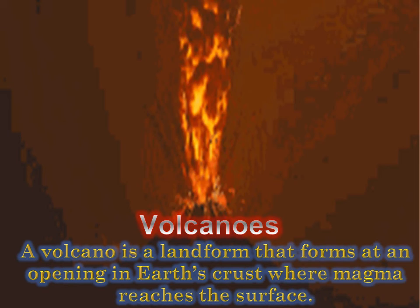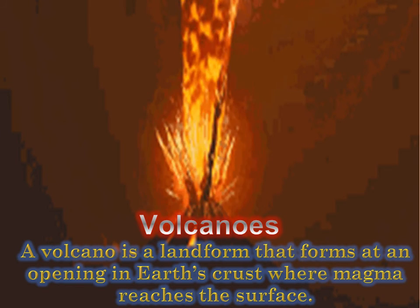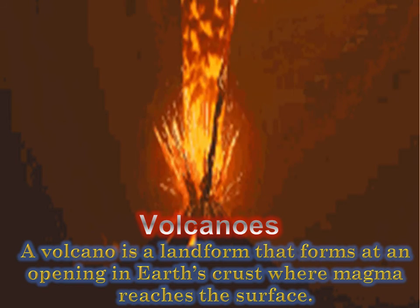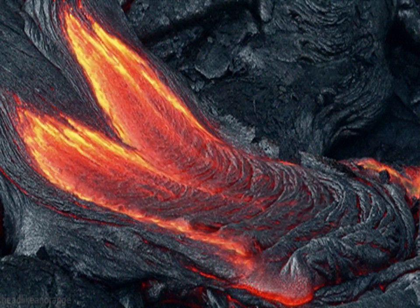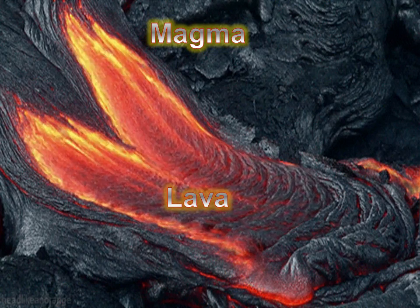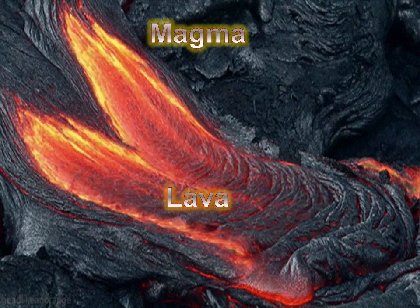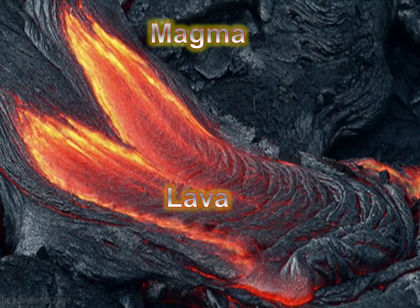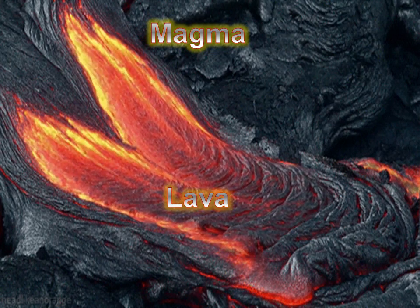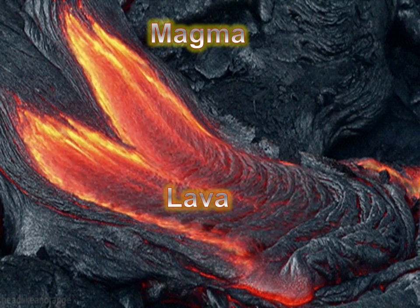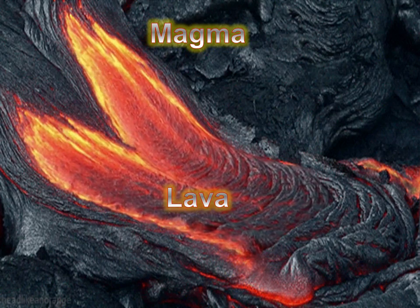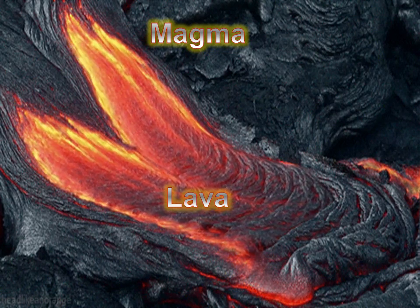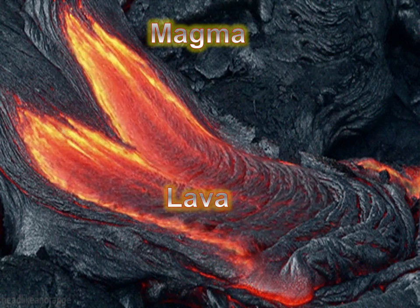Volcanoes: a volcano is a landform that forms at an opening in earth's crust where magma reaches the surface. Magma is very hot, partially melted rock. When a volcano erupts, the magma reaches the surface and is called lava. Lava is still hot — near 1100 degrees Celsius. The temperature and kind of rock that makes up magma determine the type of eruption.